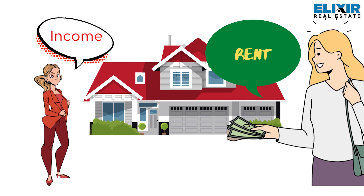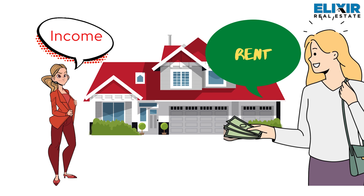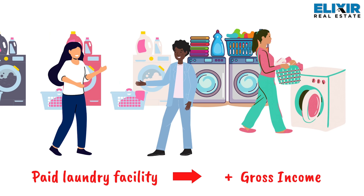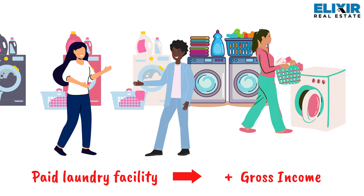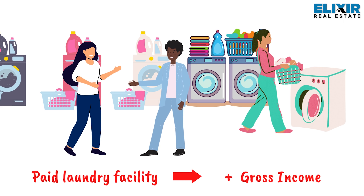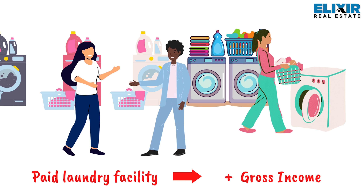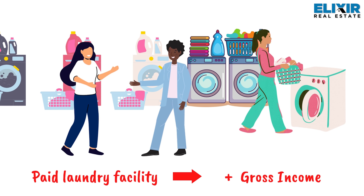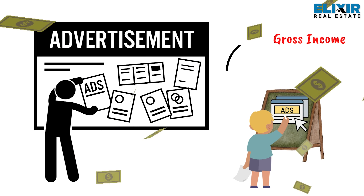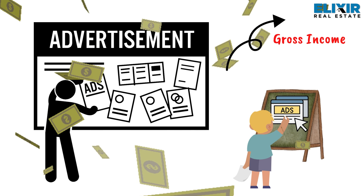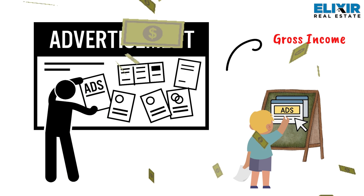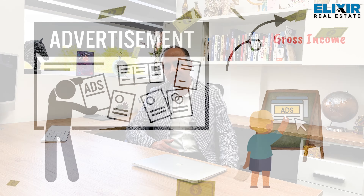Gross income would include any other rents received for the property. For instance, if the property has a paid laundry facility shared by other units in the building, the revenue from the laundry machines will be part of gross income. If there is any advertising sign on the property and you are generating revenue from there, it would contribute as well to our gross income.